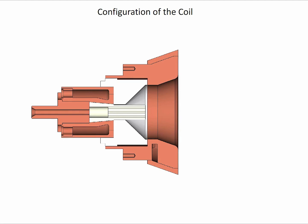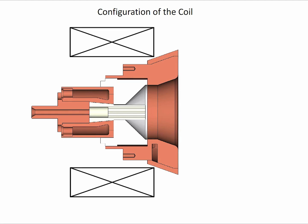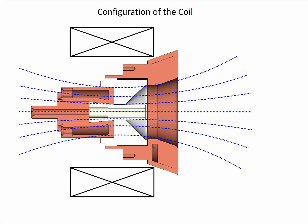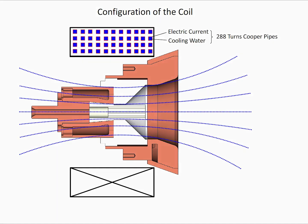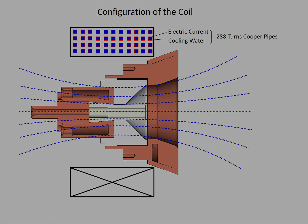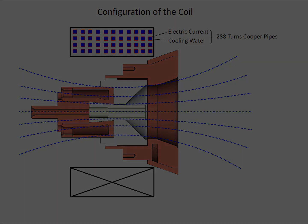Besides the main body of the thruster, an external magnetic coil is also necessary for the working of the MPD thruster. The coil consists of 288 turn circular copper pipes.